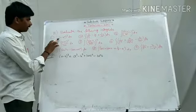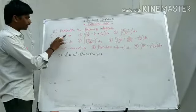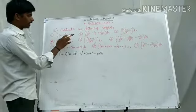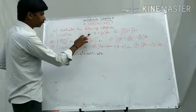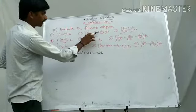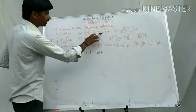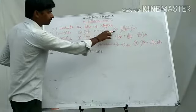Number 1: integral of (1 minus x²) whole cube dx. Number 2: integral of 3 by root x minus 2 by x plus 1 by 3x squared dx.